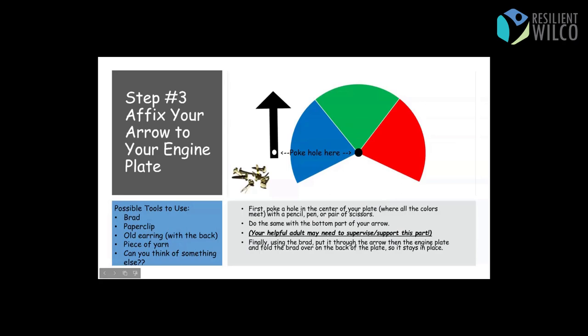And step three, affix your arrow to your engine plate. And what that means is you're going to take something like a brad that you can see there. You're going to poke a hole in your arrow, in the bottom of your arrow, and you're going to poke a hole in the plate. Now, you may need a helpful adult to supervise with this part, because it's kind of tricky poking the holes. But be safe, whatever you're doing, and use something to poke a hole in the plate and in the arrow. And then put them together. And the brad is a perfect tool for this. Not a lot of people have brads. So I was trying to get creative. You could use a paper clip maybe and bend it a certain way. An old earring with the back on it. A piece of yarn probably if you tied knots on both sides. You can probably come up with something else if you really want. But that's the idea, is to put the arrow on top of the engine plate there. And can you guess why?